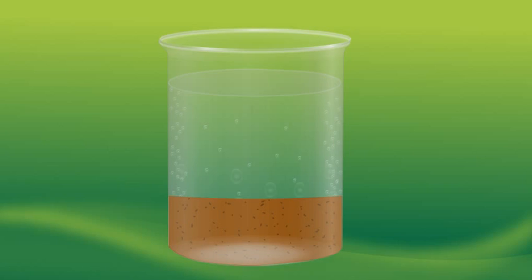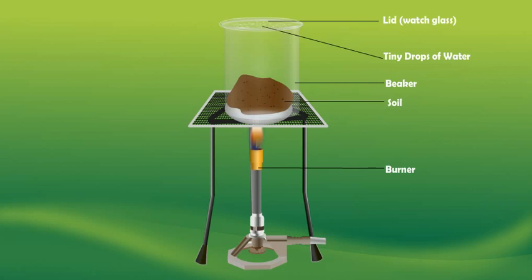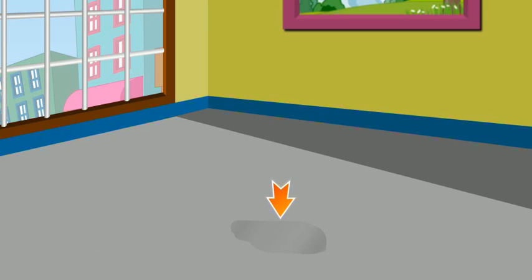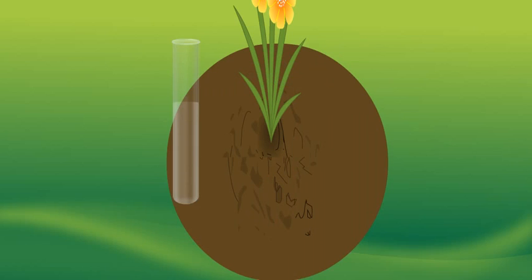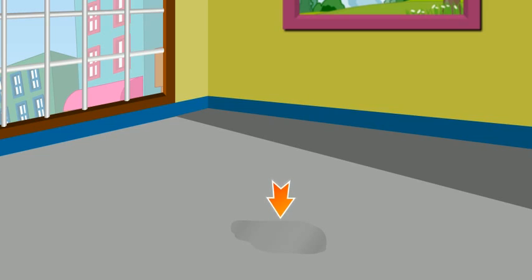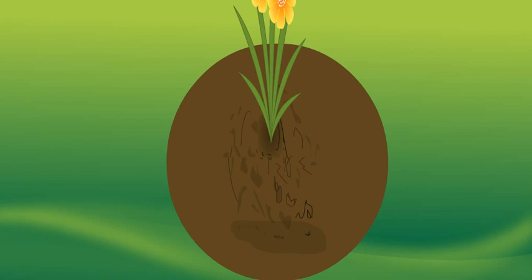Soil contains air. Air is present in the spaces between the soil particles. When we pour water onto a cemented floor, it flows down and is not absorbed. However, when we pour water on soil kept in a flower pot, the soil absorbs the water quite rapidly. Cemented floor does not absorb water because it is not porous, whereas soil absorbs water because it is porous, having tiny pores in it.